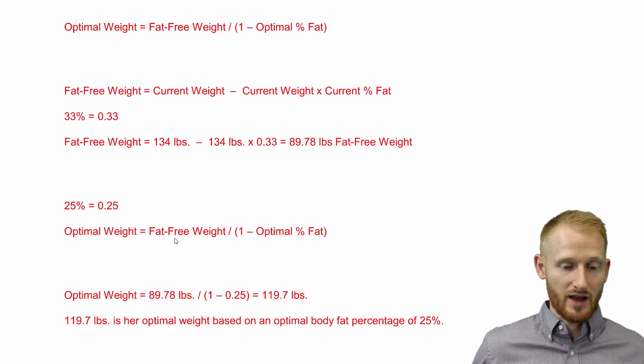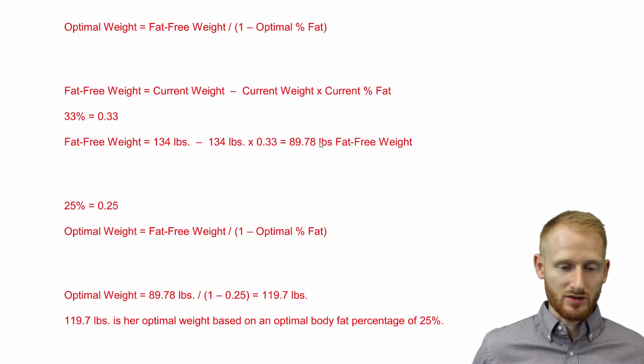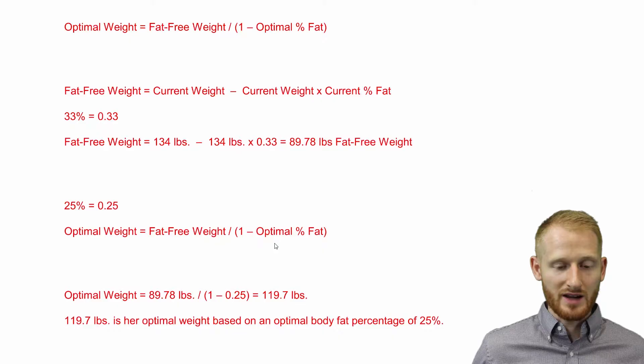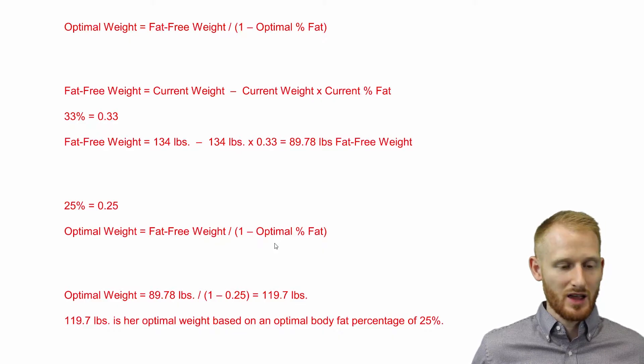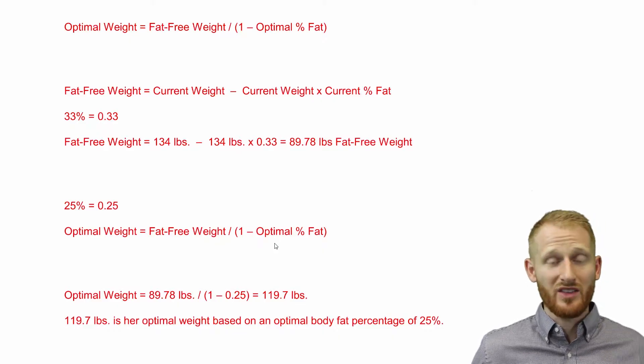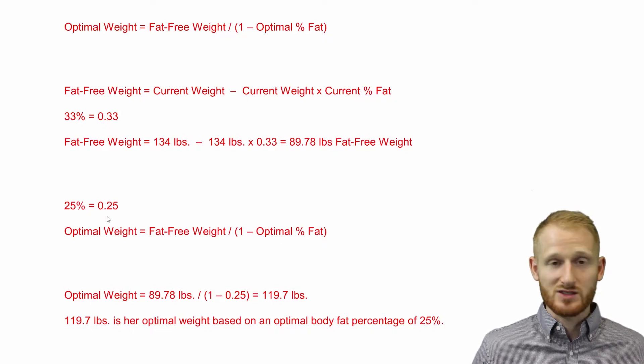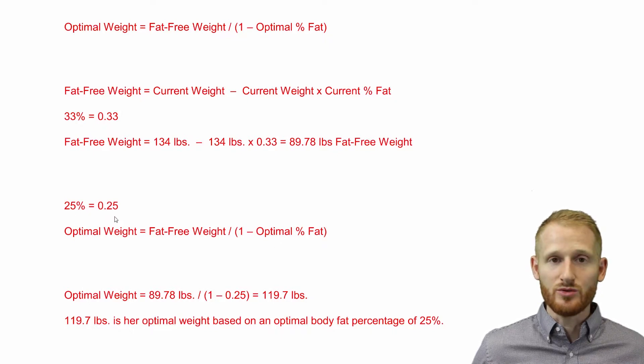So 89.78 pounds for her divided by one minus her optimal percent body fat. Her optimal percent body fat that you helped her determine was 25%. Let's turn that into a decimal: 0.25.